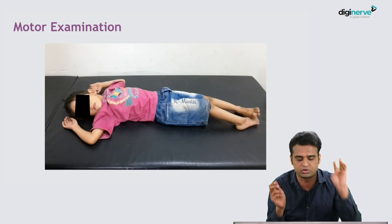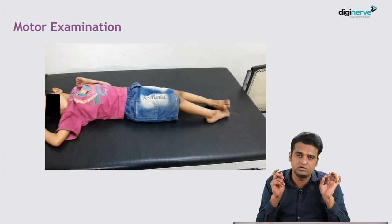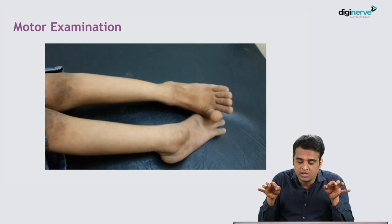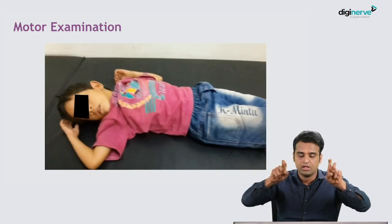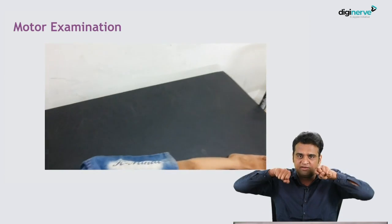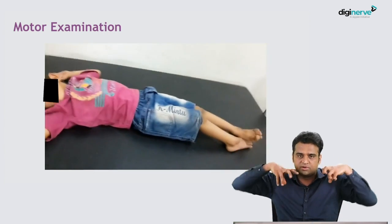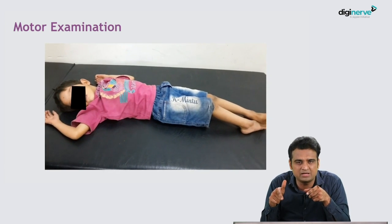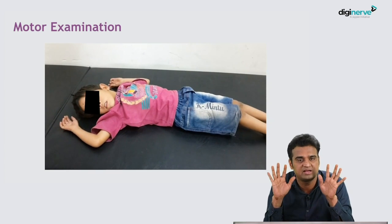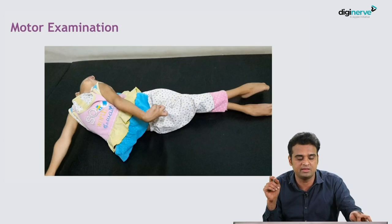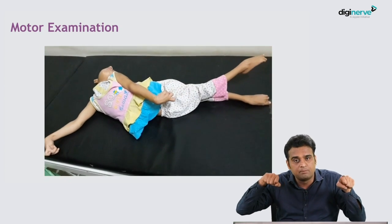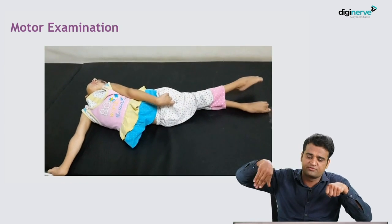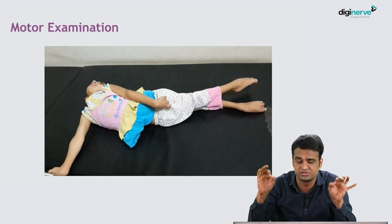Moving to motor system examination, in a non-ambulatory child you must comment on posture. In this video, you can notice the child has hyperextended great toe and tightness with dyskinetic movements across the upper limb — this is a child with dyskinetic cerebral palsy. The hyperextended toe is called striatal toe, indicating extrapyramidal tract involvement. You can also see abnormal tight posturing with twisting of the entire body and arching of the back, indicating generalized dystonia.